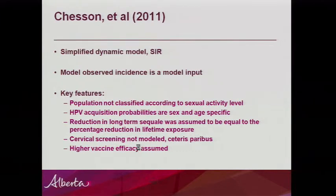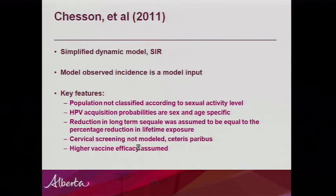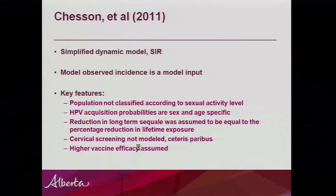The Chasson model from the CDC is a simplified dynamic model — simplifying assumptions make it easier to interpret and reduce parameter uncertainty. It is a SIR model, assuming that once you've recovered you never get HPV again. Observed incidence is a model input, so we put Alberta cancer rates directly into the model. The population is not classified by sexual activity level — probabilities are age and sex specific but not reliant on sexual activity. The reduction in long-term sequelae is assumed equal to the percentage reduction in lifetime exposure, a simplifying but reasonable assumption. Cervical screening isn't modeled — a ceteris paribus assumption that nothing changes. A higher vaccine efficacy was assumed in this CDC model compared to the Merck model.